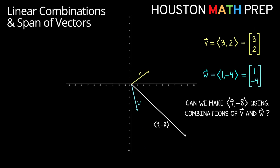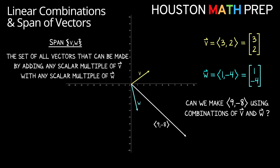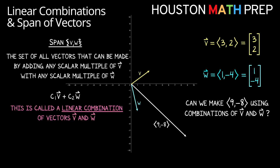Now what if we try to use some combination of traveling vector v and traveling vector w to arrive where the vector 9 comma negative 8 takes us from the origin? This is the idea of the span of two vectors v and w — the set of all vectors that can be made by adding any scalar multiple of v with any scalar multiple of w. Written out, it looks like some multiple of v plus some multiple of w, and this is what we call a linear combination of vectors v and w.